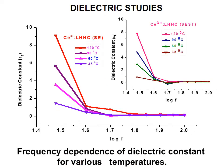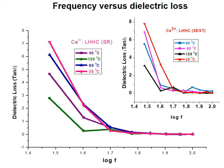Dielectric studies: As frequency increases, the dielectric constant decreases for both SEST and SR method crystals. For frequency versus dielectric loss: a graph is depicted between log F and dielectric loss at temperatures 35°C, 60°C, 90°C, and 120°C. It is clearly observed that dielectric loss decreases at higher frequencies. These materials therefore have enhanced optical quality with minimum defects.